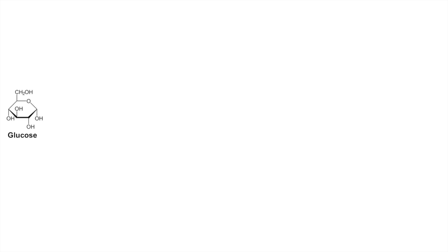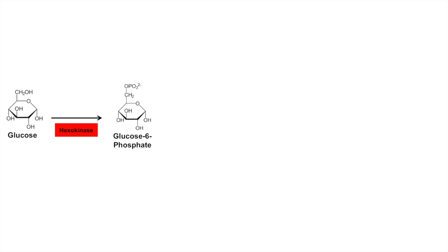When a glucose enters a cell, it can be phosphorylated by hexokinase or glucokinase, as we've learned in other lessons, to glucose 6-phosphate. Glucose 6-phosphate is the hub of many different signaling pathways — it can be used for several different purposes. One thing it can do is be dephosphorylated back to glucose by glucose 6-phosphatase if glucose is needed.